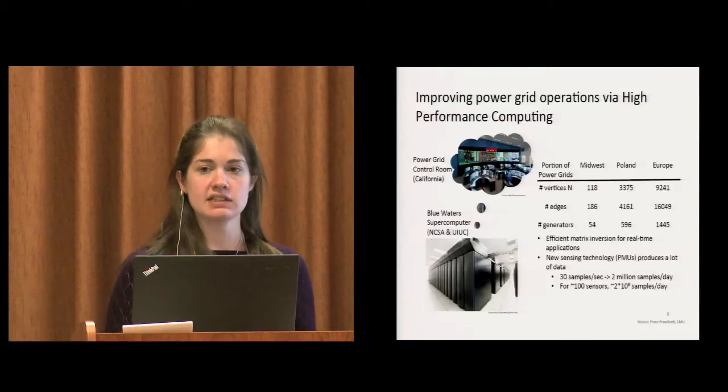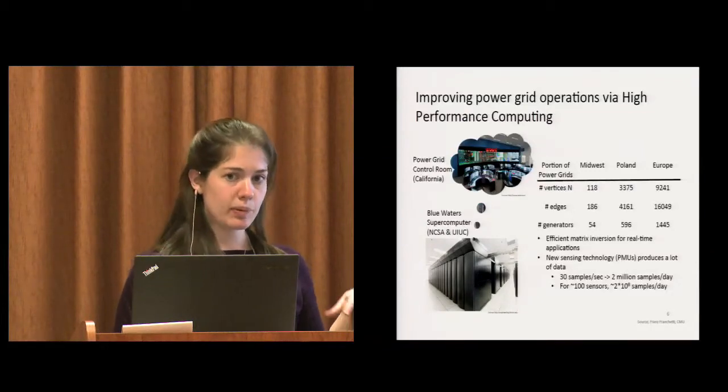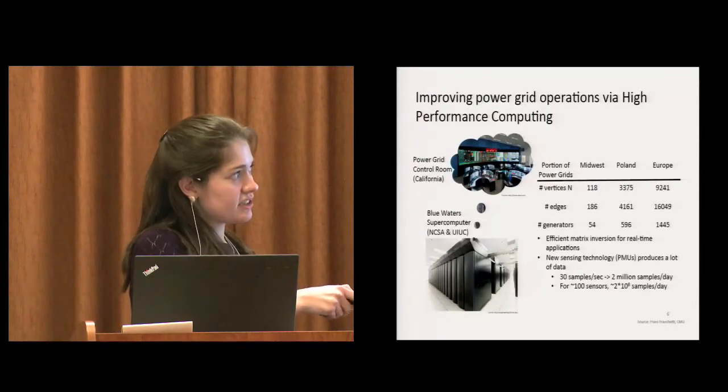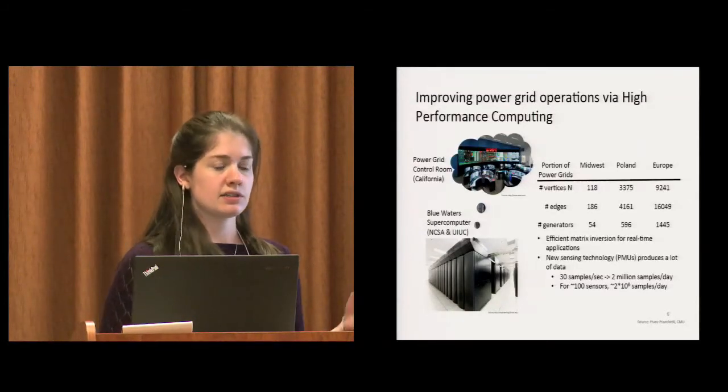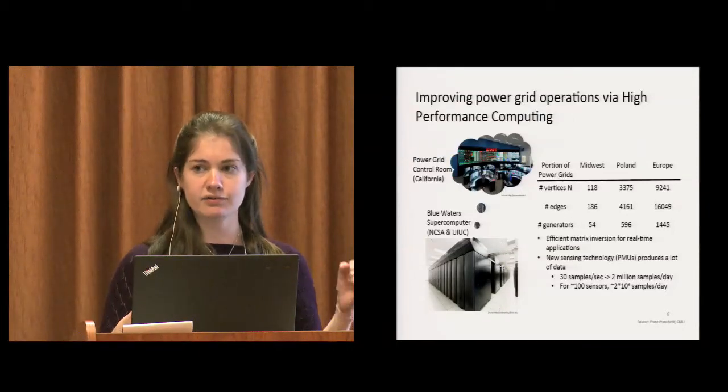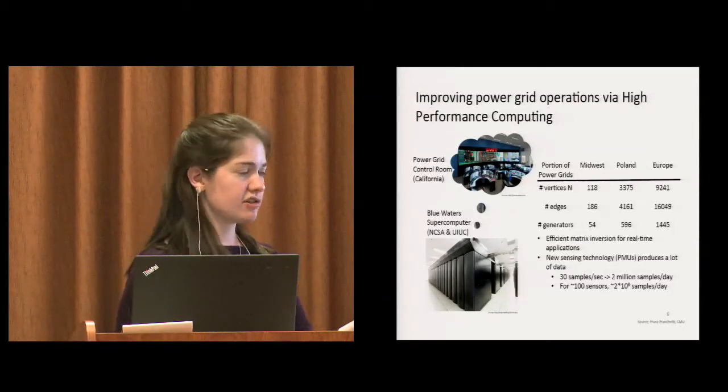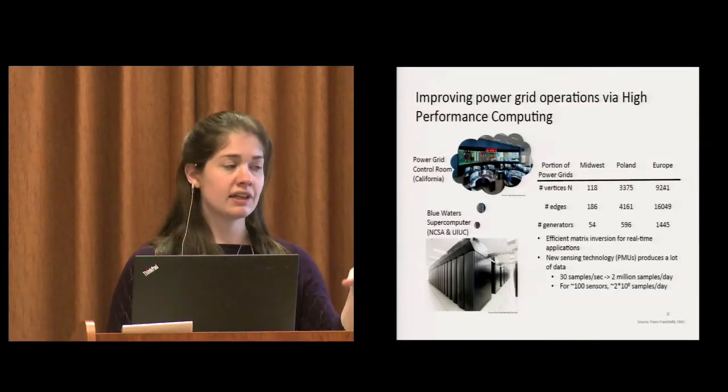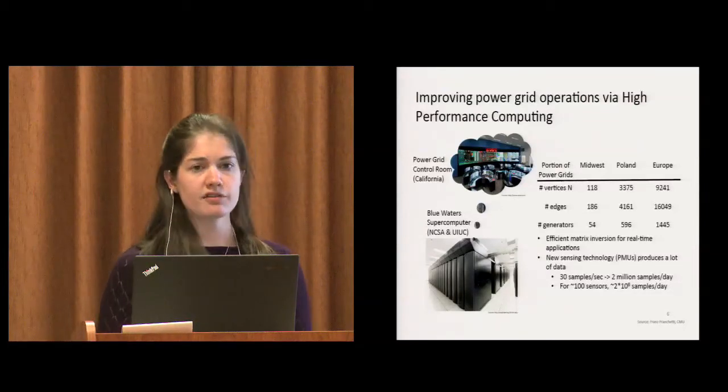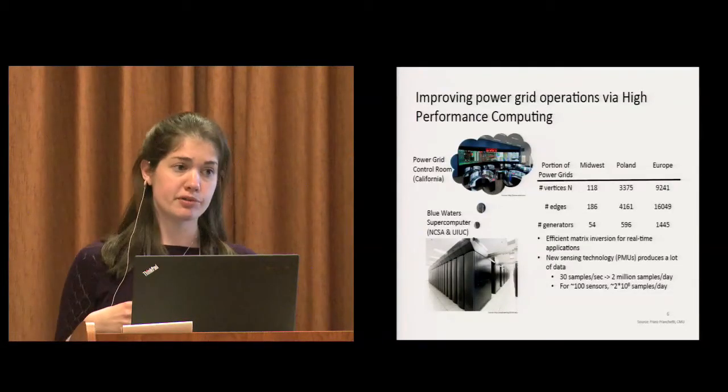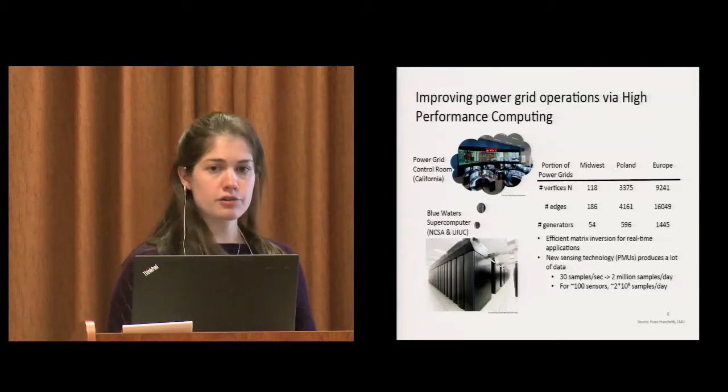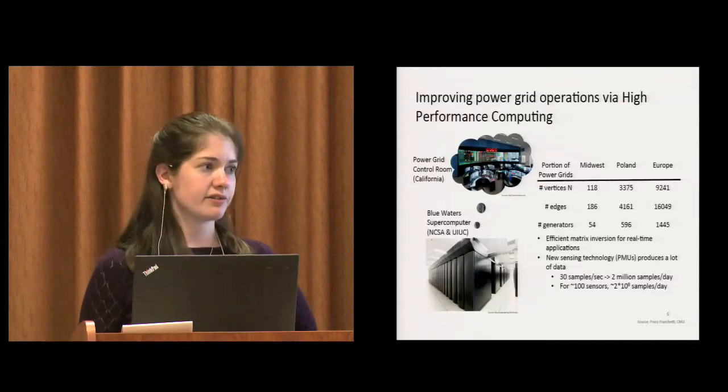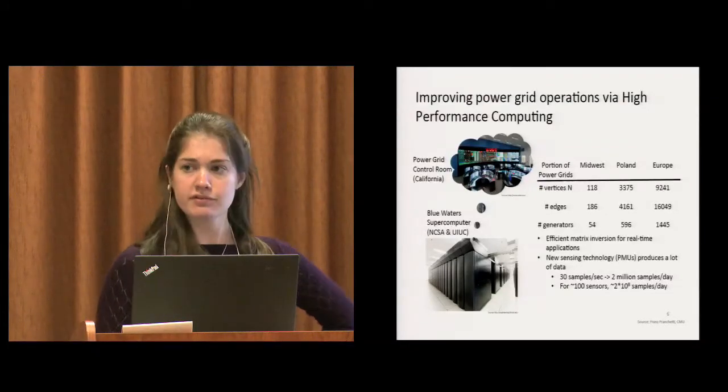However, there are a set of test cases, which are portions of real power grids with realistic numbers that we can work with. I put three here just to give you a sense of scale. The power grid is a network. You can model it as a graph with vertices and edges, where edges are the transmission lines. A lot of papers coming from universities use systems with only hundreds of vertices. Using Blue Waters, I could test my algorithm on a system with more like 1,000 vertices.